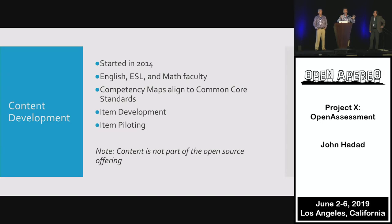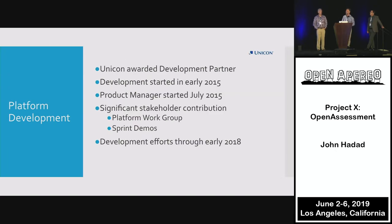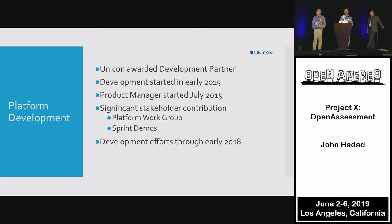Once we had those competency maps finalized and all faculty had agreed, we moved into item development, which culminated in item piloting conducted through the actual platform once it was ready. That allowed us to validate the items and get the assessment approved. One important note: the content itself is not part of the open source offering — as everybody can understand, it's difficult to offer the content up as well. Unicon was awarded the development partnership and started early in 2015.